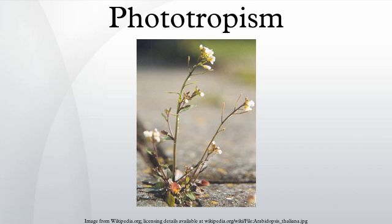Roots usually exhibit negative phototropism, although gravitropism may play a larger role in root behavior and growth. Some vine shoot tips exhibit negative phototropism, which allows them to grow towards dark, solid objects and climb them. The combination of phototropism and gravitropism allow plants to grow in the correct direction.